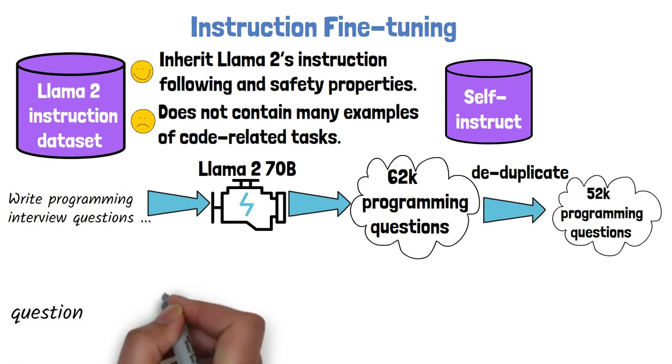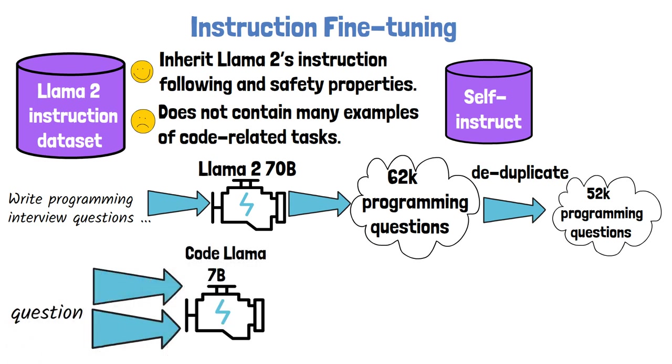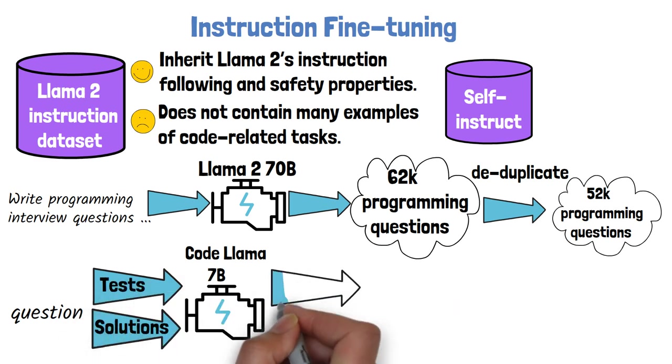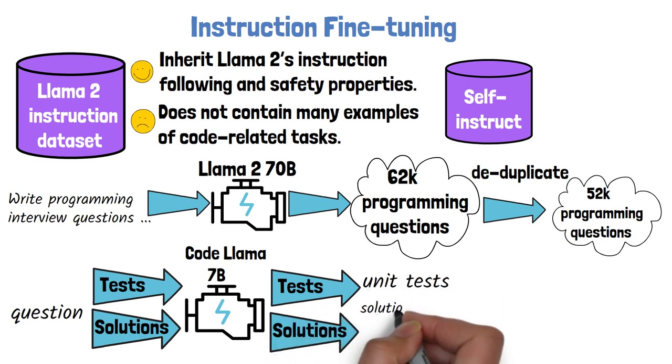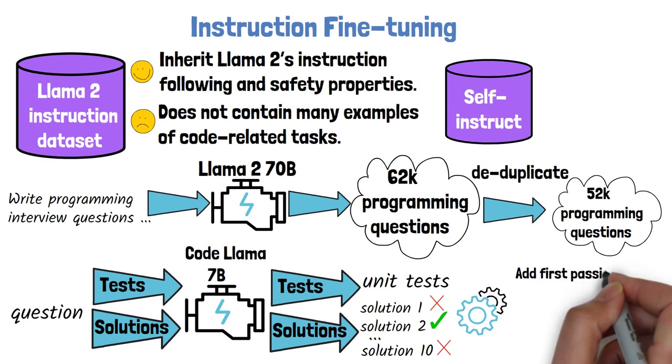Then, for each question, we pass it twice via CodeLama 7B, first with a prompt to generate unit tests for the question, and second with a prompt to generate 10 solutions for the question. CodeLama then generates the unit test and 10 solutions for the question. We run the unit test on the generated solutions to tell which solution is correct, and add the first passing solution, along with the question and test, to the self-instruct dataset.